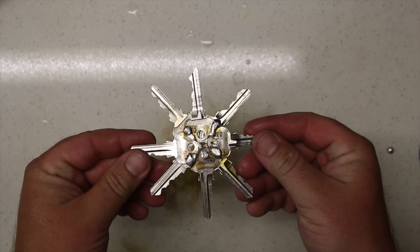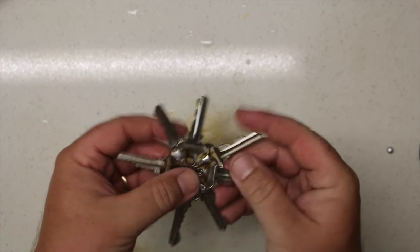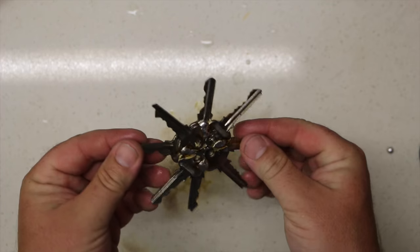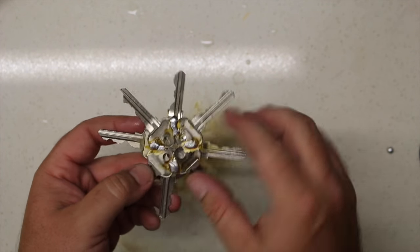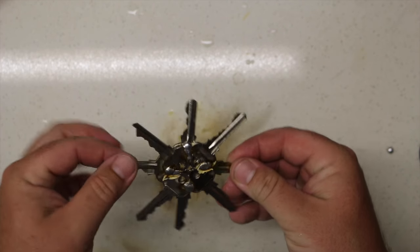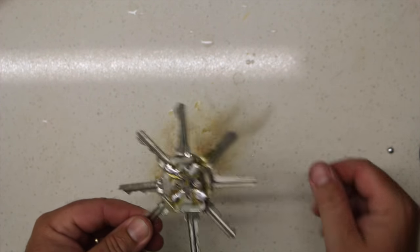So there it is guys, your snowflake. Just two crosses joined together makes a perfect little star or snowflake, whatever you want to call it. You can clean these up, give it a spray with some paint, make it look all pretty, hang it on your tree. Awesome.